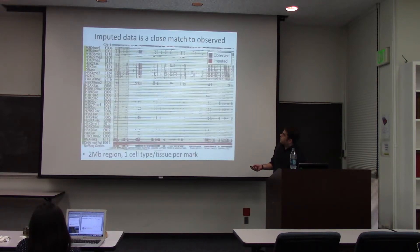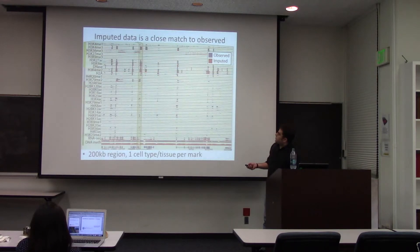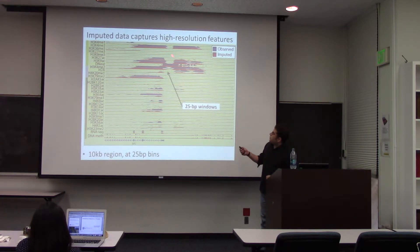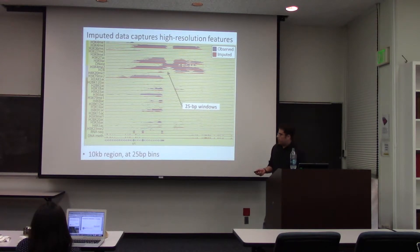This was shown at 200 base pair resolution, but we can look at varying resolutions. At 2 megabase resolution, zooming in to 2 KB and down to 10 KB, you can see the predictions were made at 25 base pair resolution — capturing even nucleosome depletion and very fine features in the data. This was done genome-wide for more than 4,000 data sets.